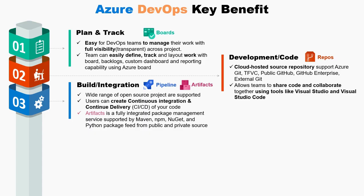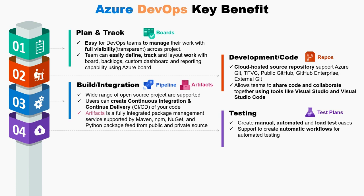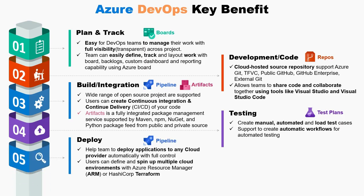Artifacts are integrated with various package management services used in Azure Pipeline during continuous integration and continuous delivery. Azure Test Plan provides all the tools needed to successfully test applications — you can create and run manual test plans, generate automated tests, and configure automatic workflows for automated testing. While deploying the code using the CI/CD pipeline, it can test, build, and ship to any targeted cloud provider at the click of a button. It also supports infrastructure as code to automatically provision the infrastructure required for the application using templates like Azure Resource Manager and Terraform, to spin up multiple cloud environments very quickly.